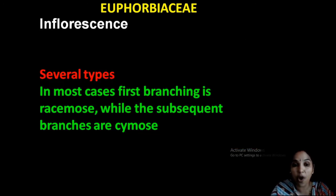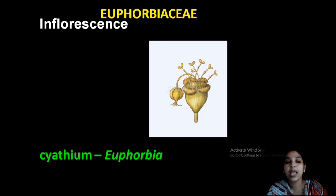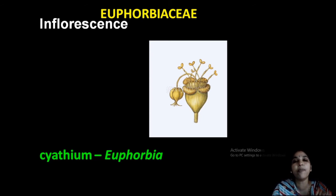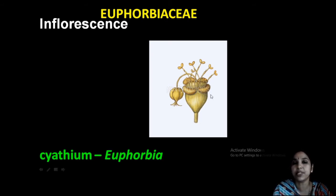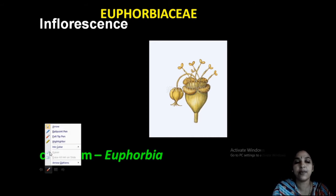Now looking into the inflorescence — there are different types. Usually racemose or may be cymose. A special type of inflorescence, namely cyathium, is a common feature of this family. All Euphorbia members have cyathium. Cyathium is a cup-shaped structure with an opening, containing a large number of flowers inside the receptacle, with a large single female flower.